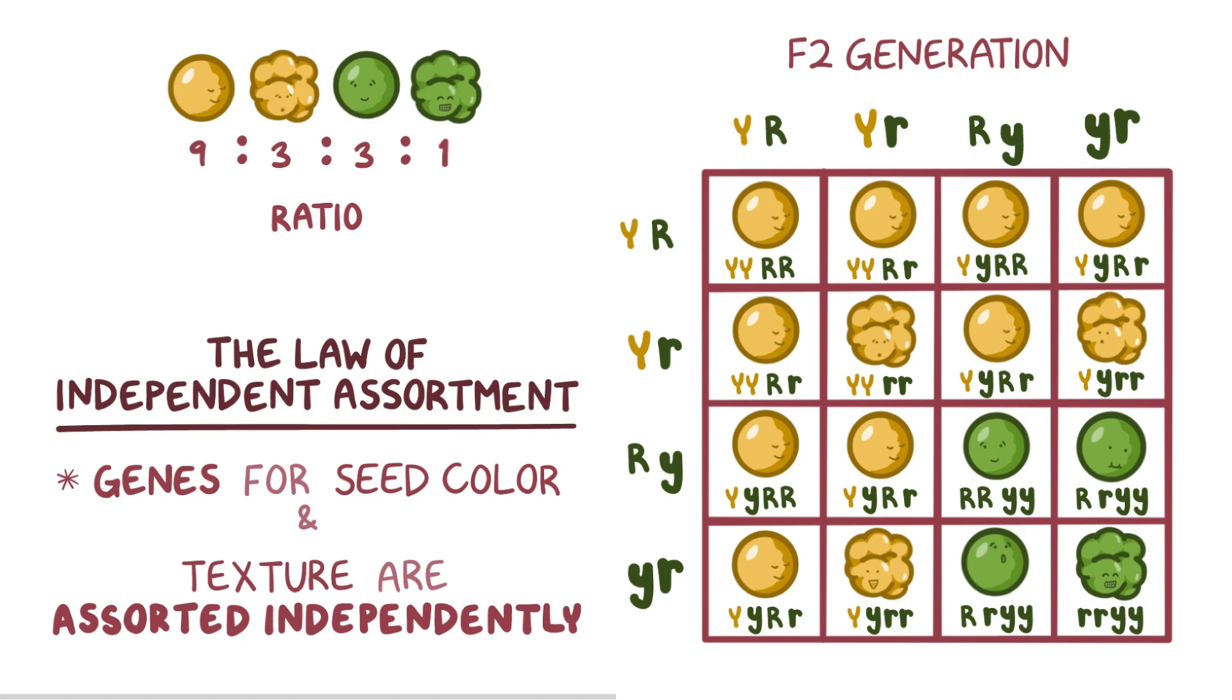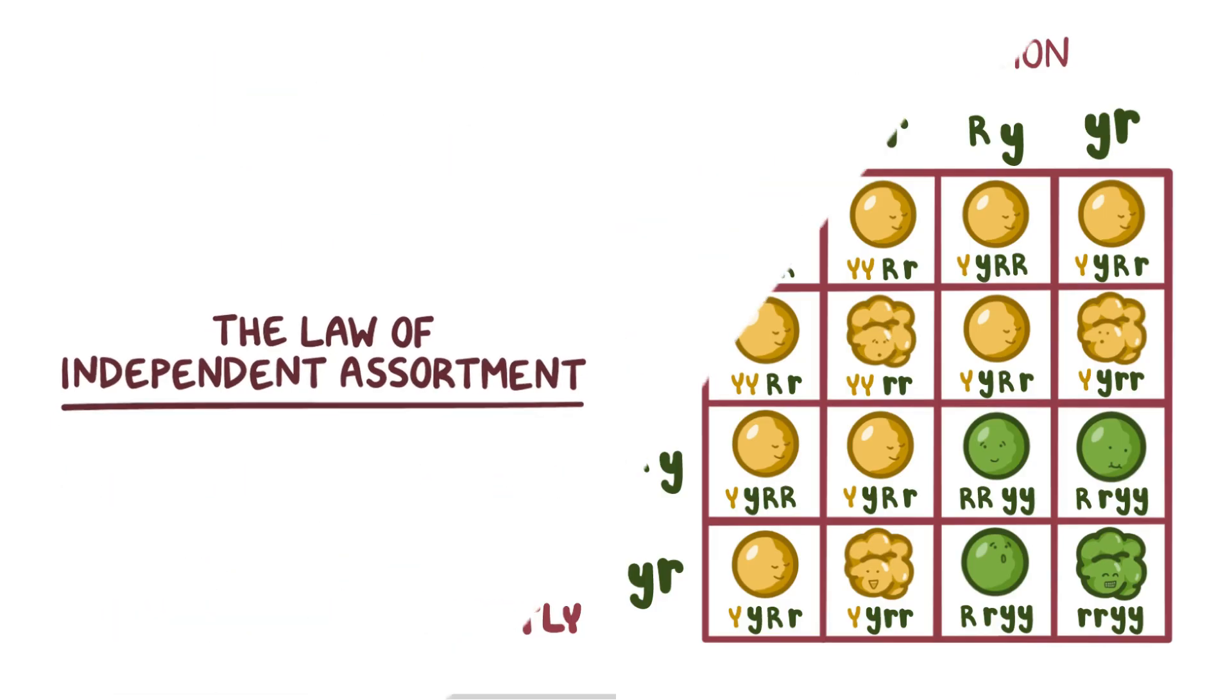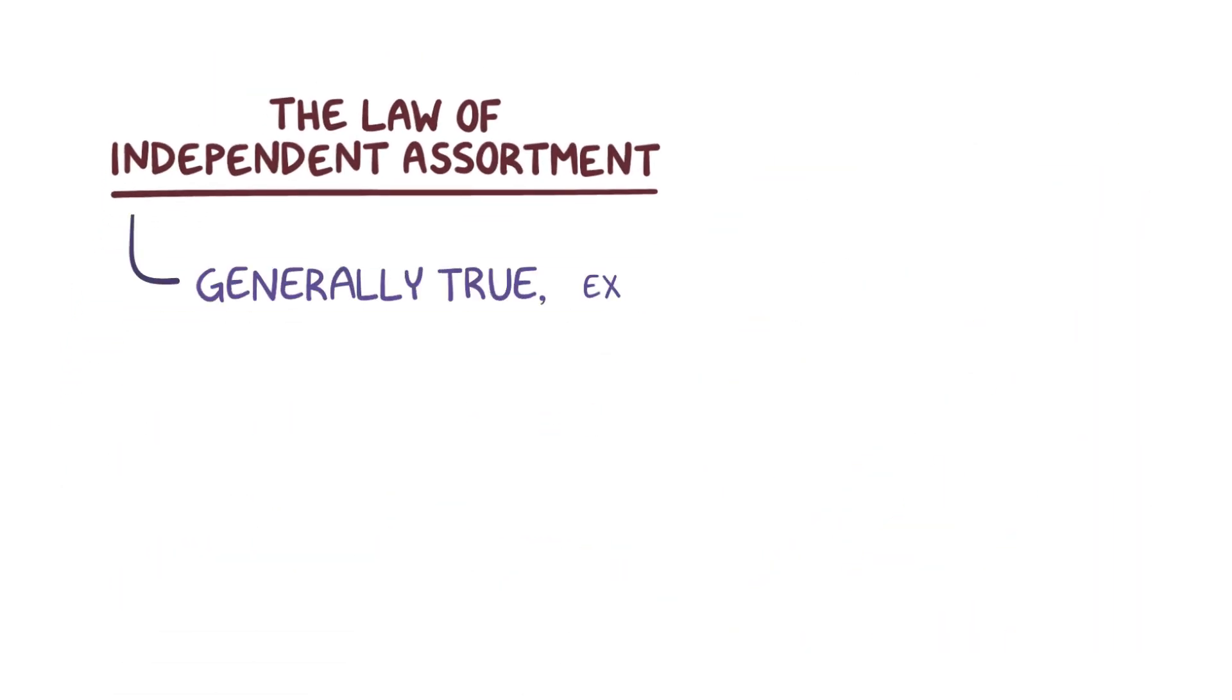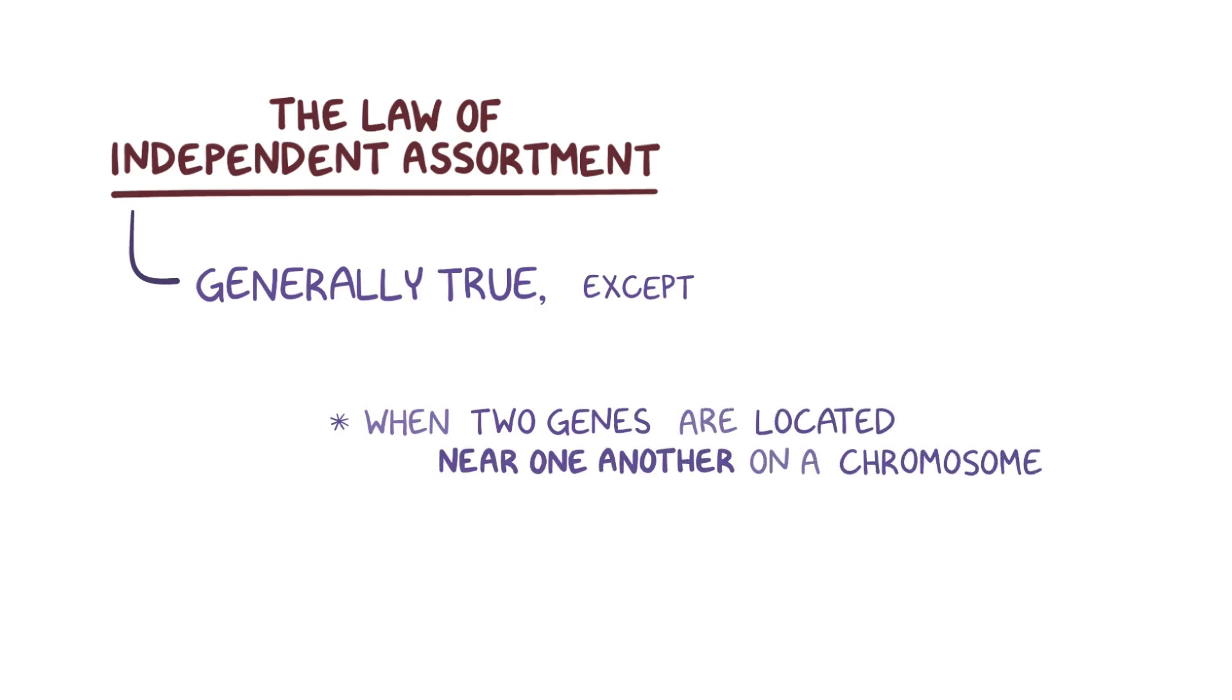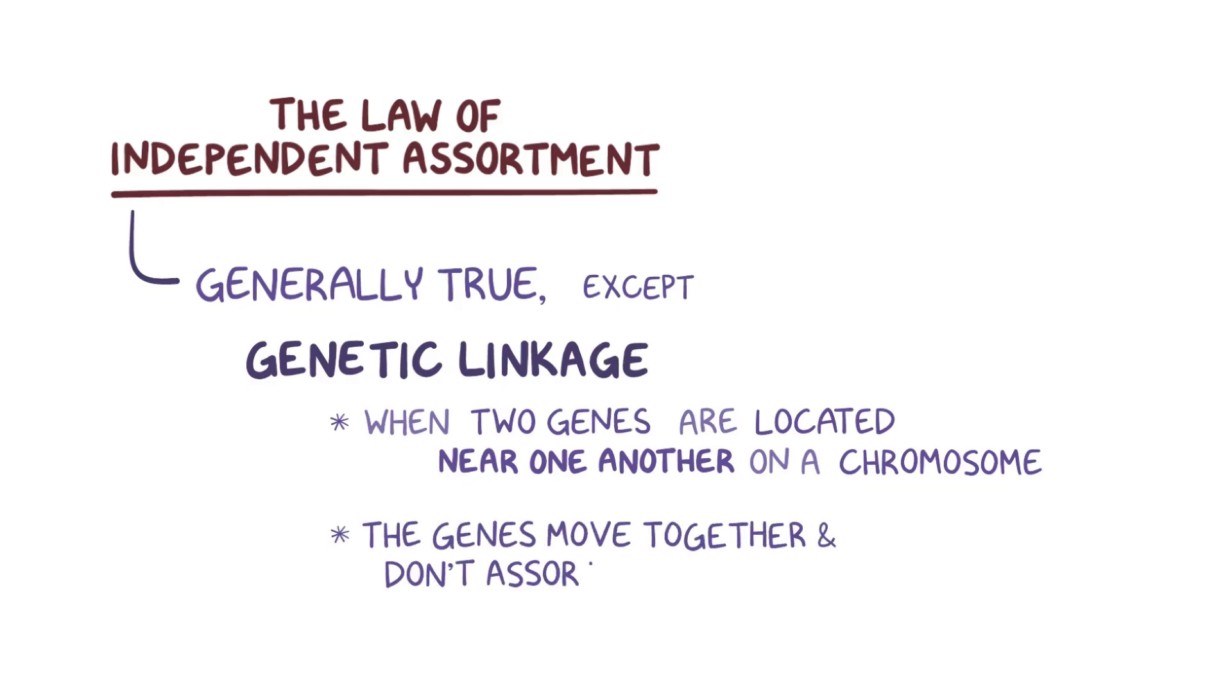In other words, having one trait did not make having another trait any more or less likely. This law is generally true, except in certain situations, like when two genes are located really close to each other on a chromosome. When that happens, it's called genetic linkage, and the two genes start to move together more often than not, and therefore don't assort independently.